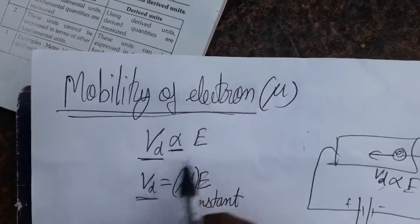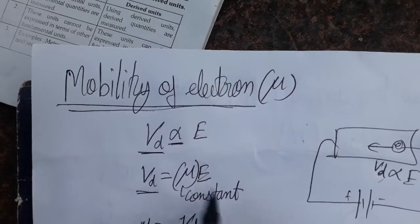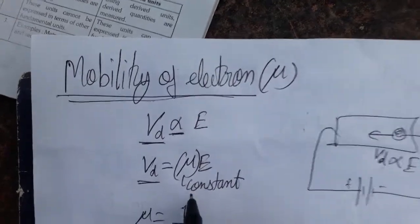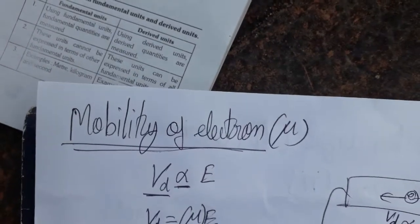When we remove the direct proportionality, we include a constant. Here, this constant is the mobility of the electron.